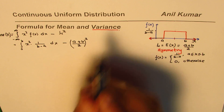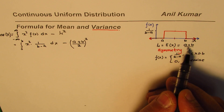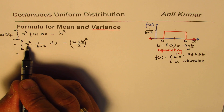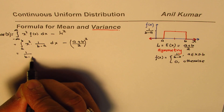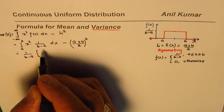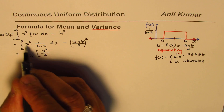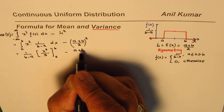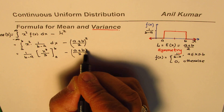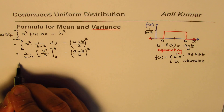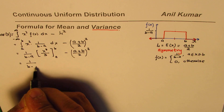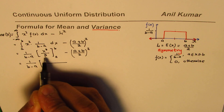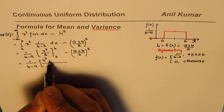Now this is a constant, so we can write it as 1/(b - a) times the integral of x² from a to b. The antiderivative of x² is x³/3 by the power rule, evaluated from a to b, minus (a + b)/2 whole squared. Substituting the limits gives us (b³ - a³)/3.